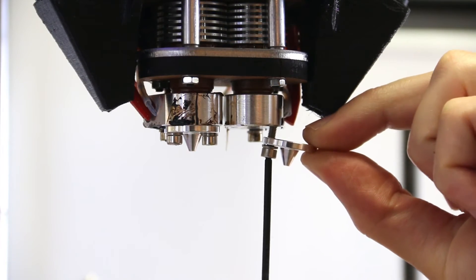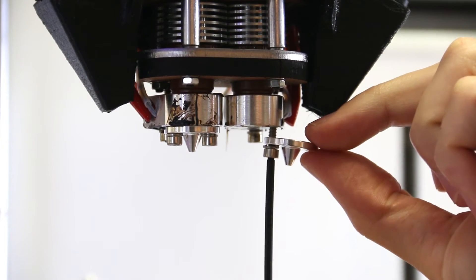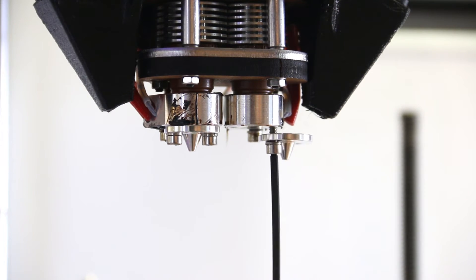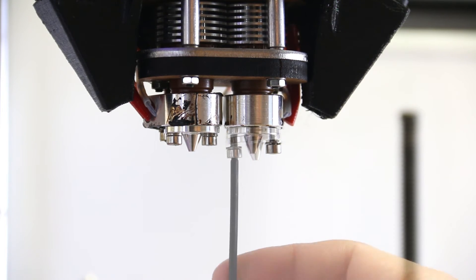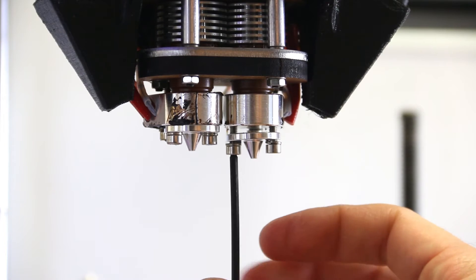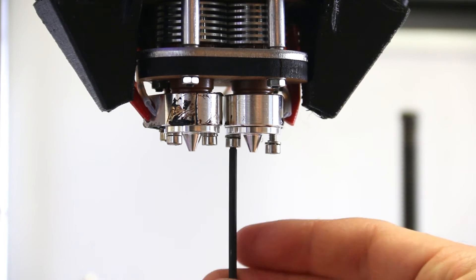Use the longer end of your Allen wrench to insert the screws one at a time. Tighten each screw sequentially until the nozzle touches the heating block.